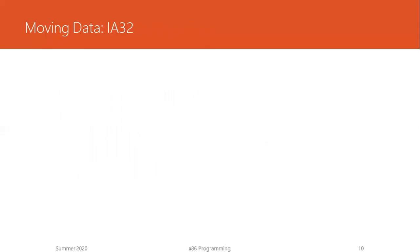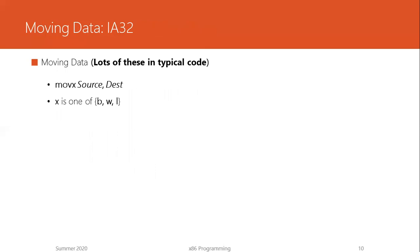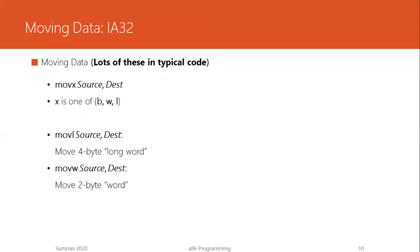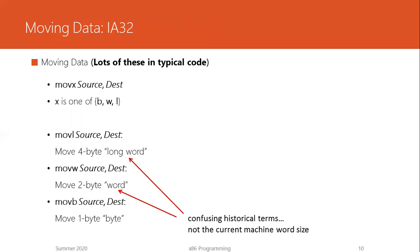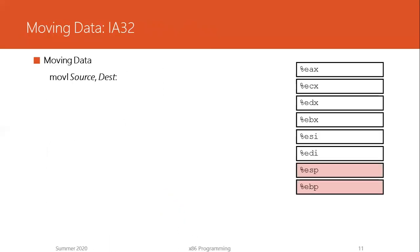Now let's talk about the instruction used for transfer of data between registers and memory. There are multiple types of instructions to move data of various sizes. The MOVX instruction, where X could be B, W, or L depending on the amount of data being moved. If we use MOVL, L stands for long word — you are moving four bytes of data. If you use MOVW, you are moving 16 bits of data, and MOVB means moving one byte. The word 'word' here is a confusing historical term — it does not mean the current machine size.